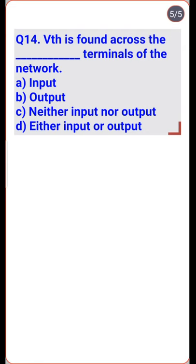According to Thevenin's theorem, Vth is found across the output terminals of a network and not the input terminals — so option B is the right one.